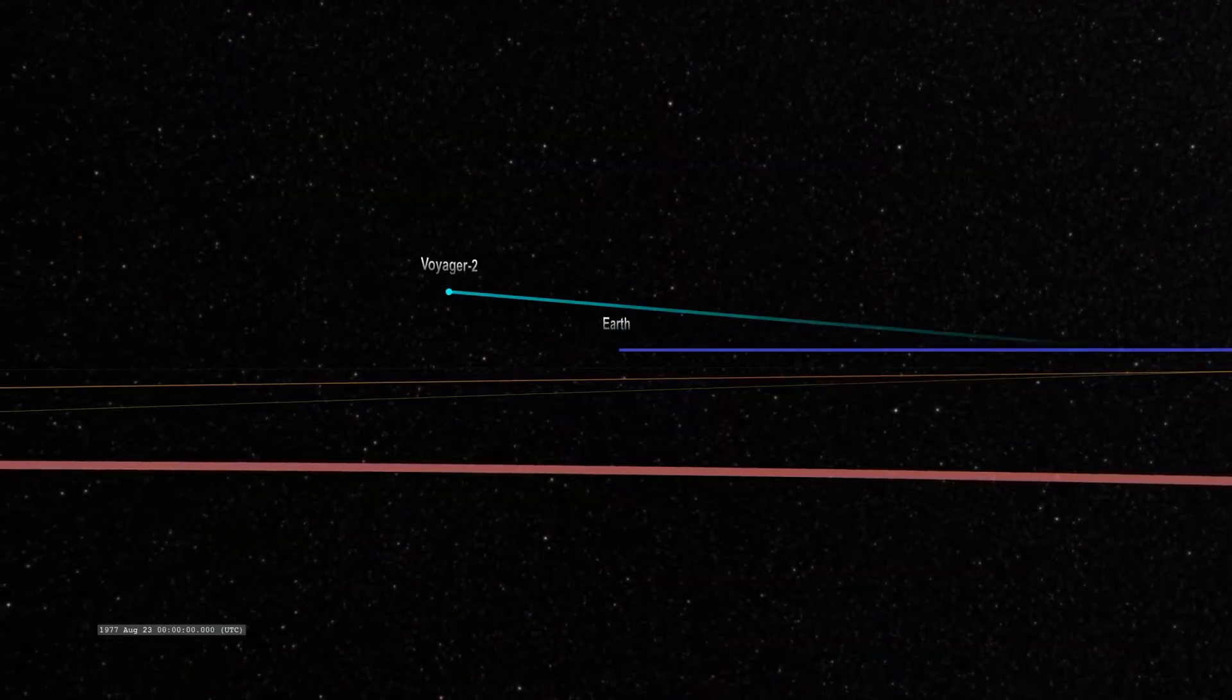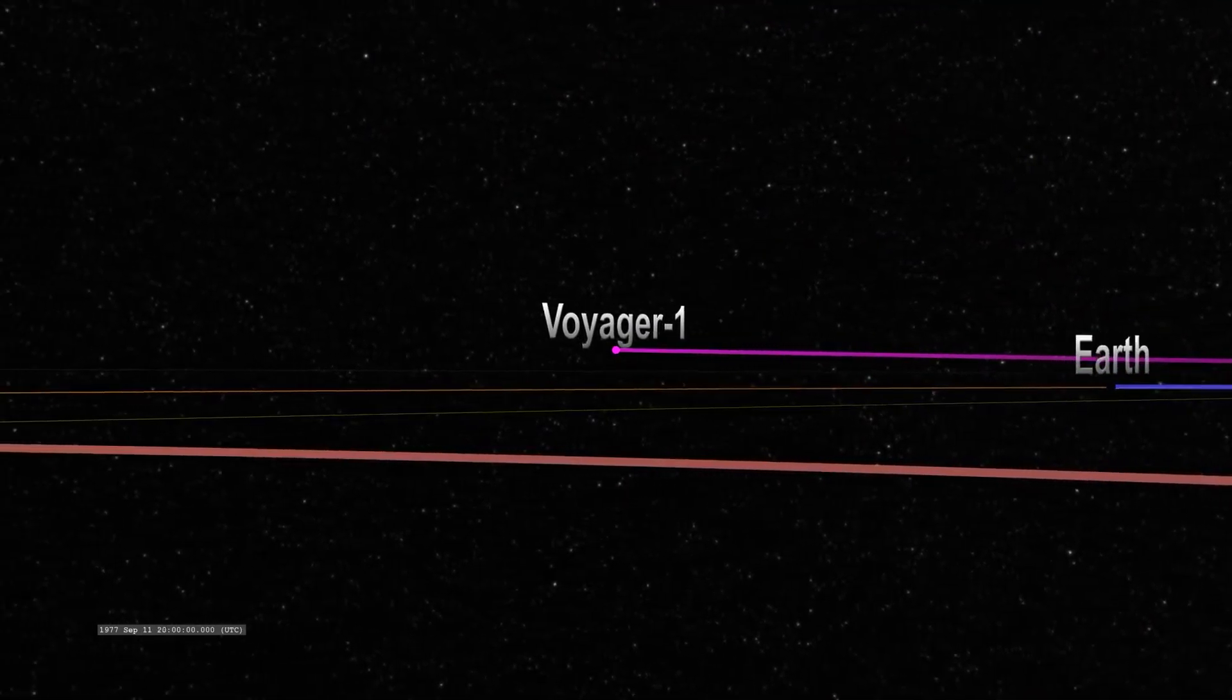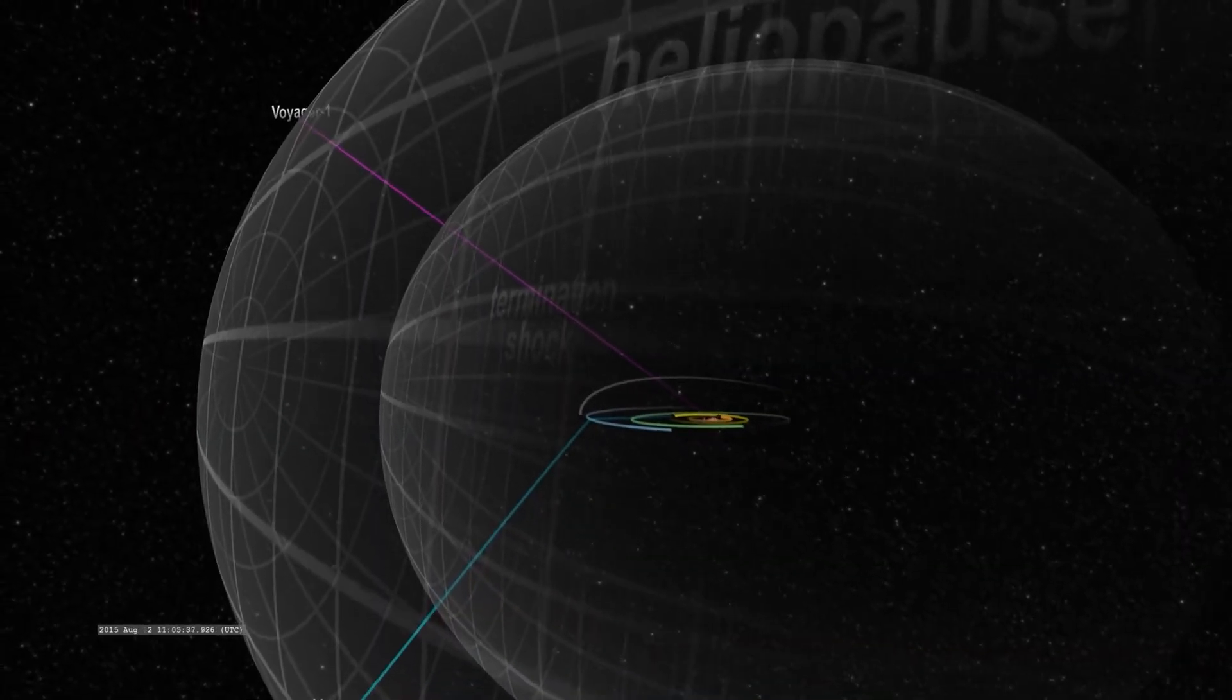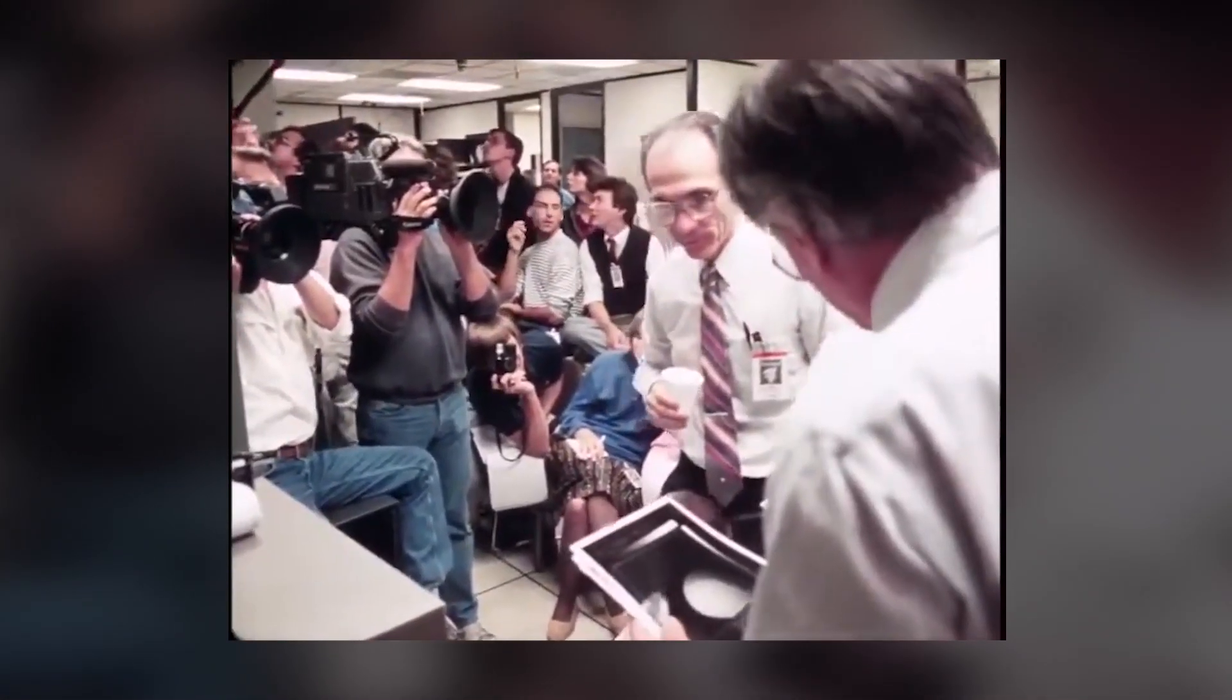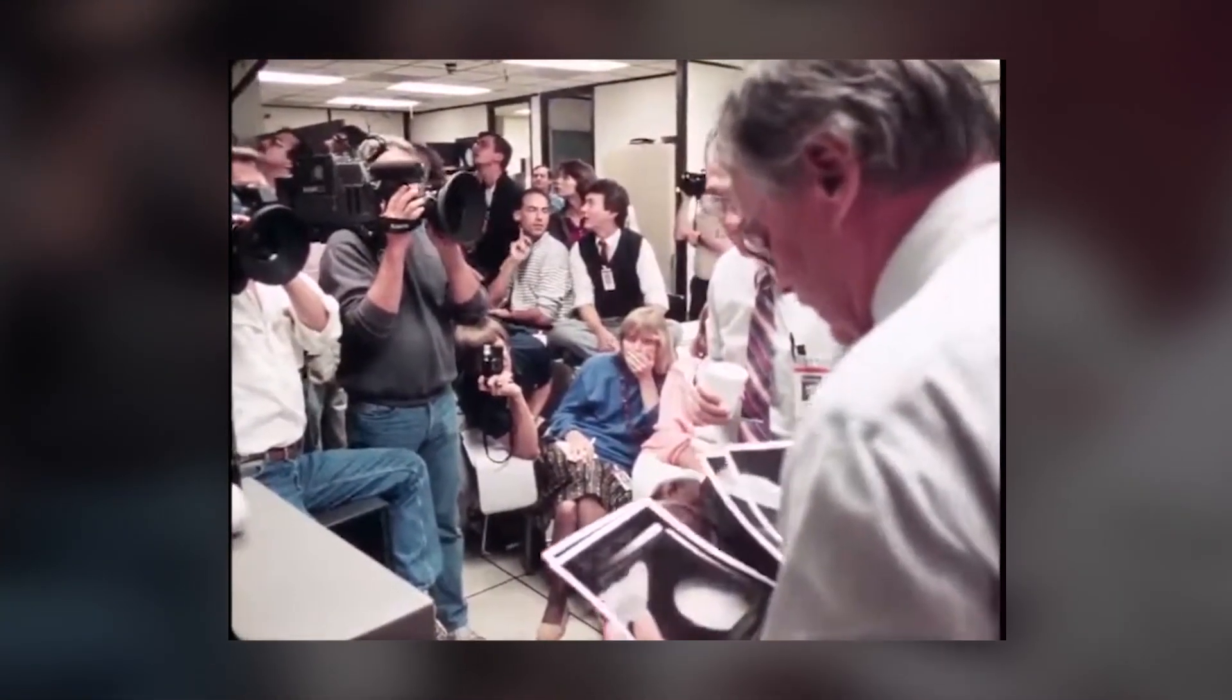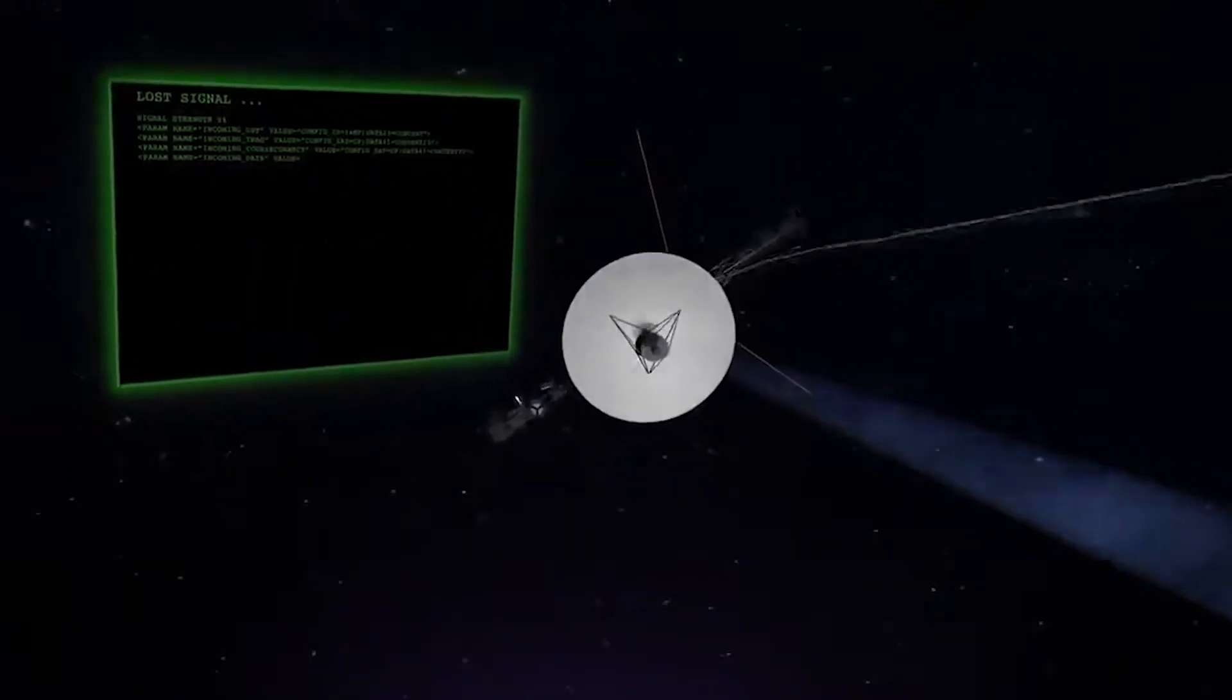With Voyager 1 well ahead of Voyager 2, the latter spacecraft was important in confirming data gathered by the former. However, as Voyager 2 neared the boundary of the Heliosphere, scientists were greatly interested in its trip because at the point when Voyager 1 made the cross, some equipment on the craft had stopped working.